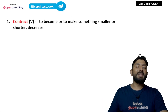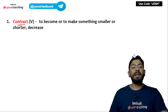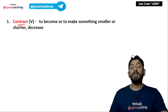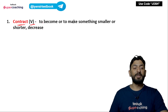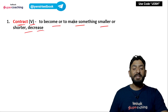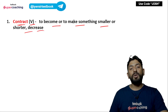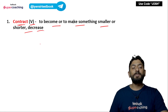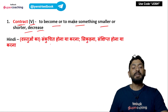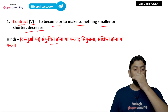Today's first word is 'contract'. Contract is a noun meaning 'agreement', but in the sentence here, contract is used as a verb meaning to become or to make something smaller or shorter — decrease. किसी चीज़ को बहुत ज़्यादा छोटा कर देना उसको भी contract कहते हैं. As a verb, its Hindi meaning is संकुचित होना या करना, सिकुड़ना.